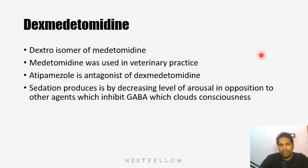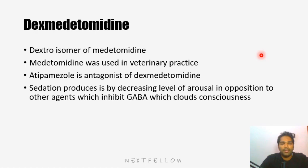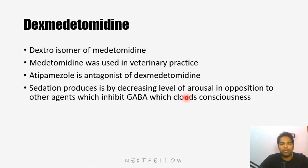There are two drugs: dexmedetomidine and clonidine. In current anesthesia practice, dexmedetomidine is like a rock star — almost everyone wants to use it because it is a very new drug with so much potential. You might get at least one question from this topic. Dexmedetomidine is a dextroisomer of medetomidine. Medetomidine is a well-known drug used in veterinary practice. The dextroisomer has less side effects and is less potent than medetomidine, and it is now being tried in humans. This is an MCQ question.